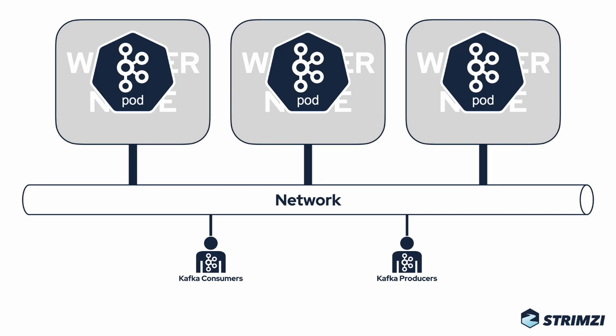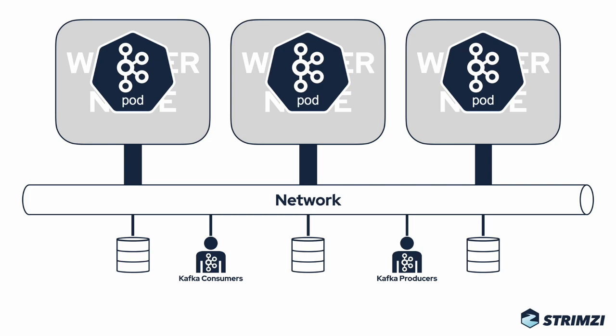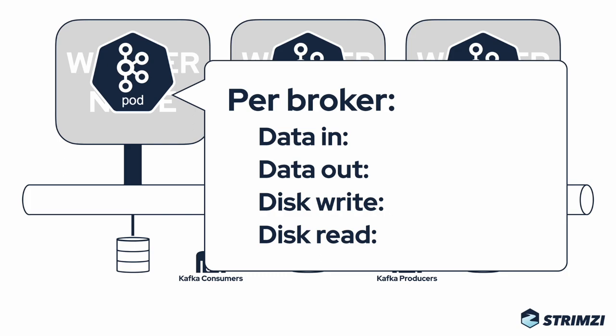So replication requires more bandwidth. Finally, the Kafka brokers need to use storage as well, and if the storage is attached to the same network, there will again be more bandwidth needed to handle it. To give you a better idea of what this means, let's look at a simplified example. Let's imagine we have a Kafka cluster with three brokers and we are using topics with replication factor three.